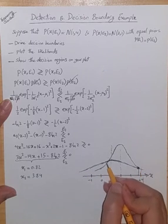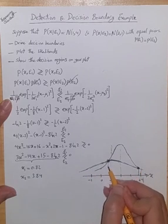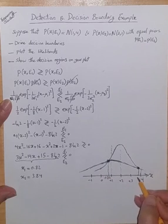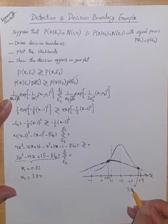So, it would be something like this for the other distribution. So, they are crossing each other at these two points. This is corresponding to 0.82, and this is corresponding to 3.84.